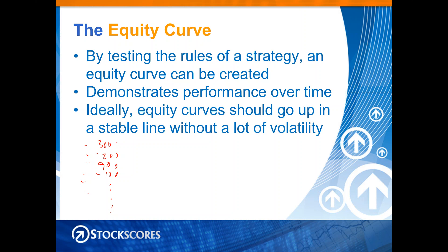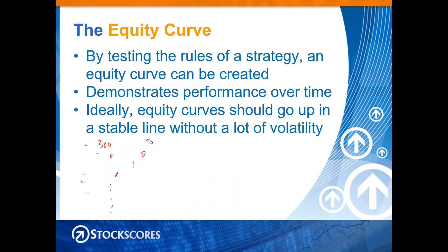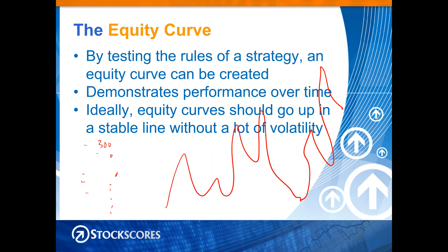As you go through a test, you can add up all your trade results — $300 made, then minus $200, then $900 made, then minus $100 — and these cumulative values are your equity curve. Ideally, equity curves should go up in a stable line without a lot of volatility. We don't want an equity curve that's erratic with huge drawdowns and sharp spikes — that would drive us crazy. We want our equity curve to be a more or less linear upward trend.